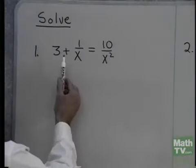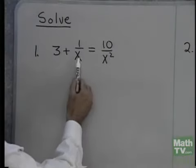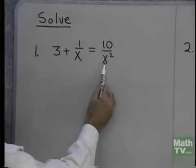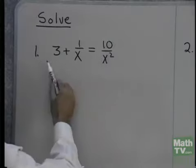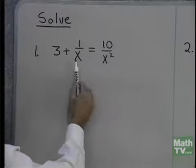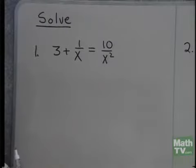For the first problem right here, I've written solve the equation 3 plus 1 over x equals 10 over x squared. Now, notice that we have a variable here in the denominator. So if by chance I solve this equation and I end up with x equals 0 as one solution, I can't use it because you cannot divide by 0. So we have to check that every time we see that the variable appears in a denominator.